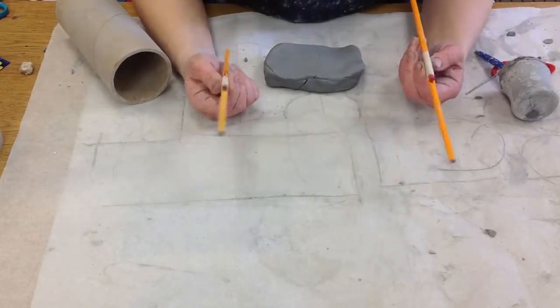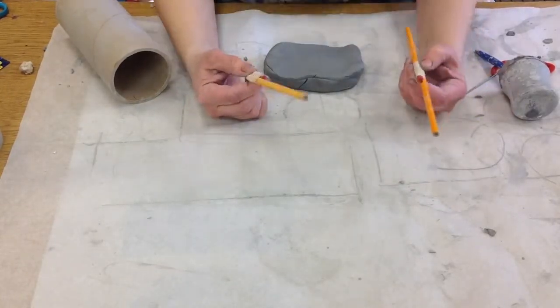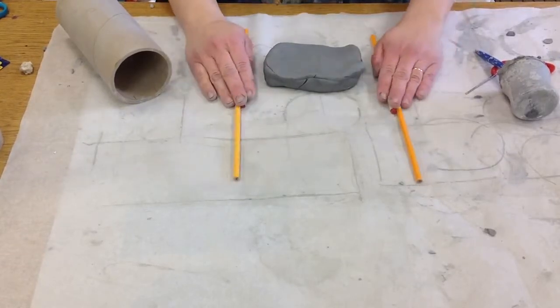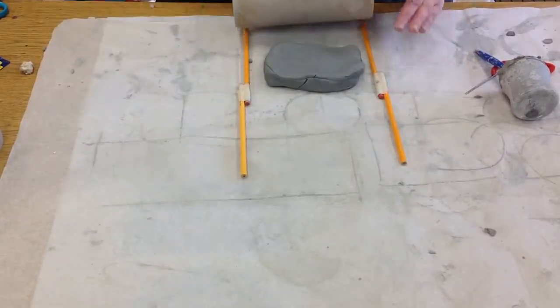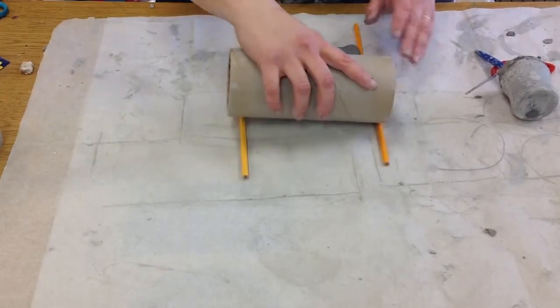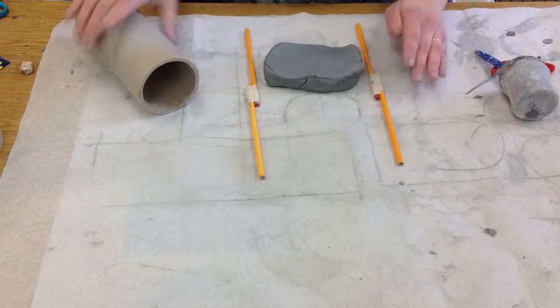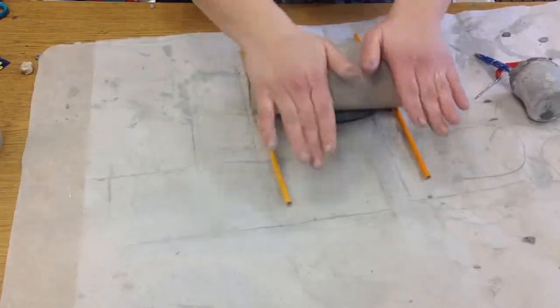Now you also have these two pencils taped together. That is so your clay does not get any thinner than the thickness of a pencil. So lay those down on the side here. As you can see, the roller will just roll on that like tracks. And start rolling that out.